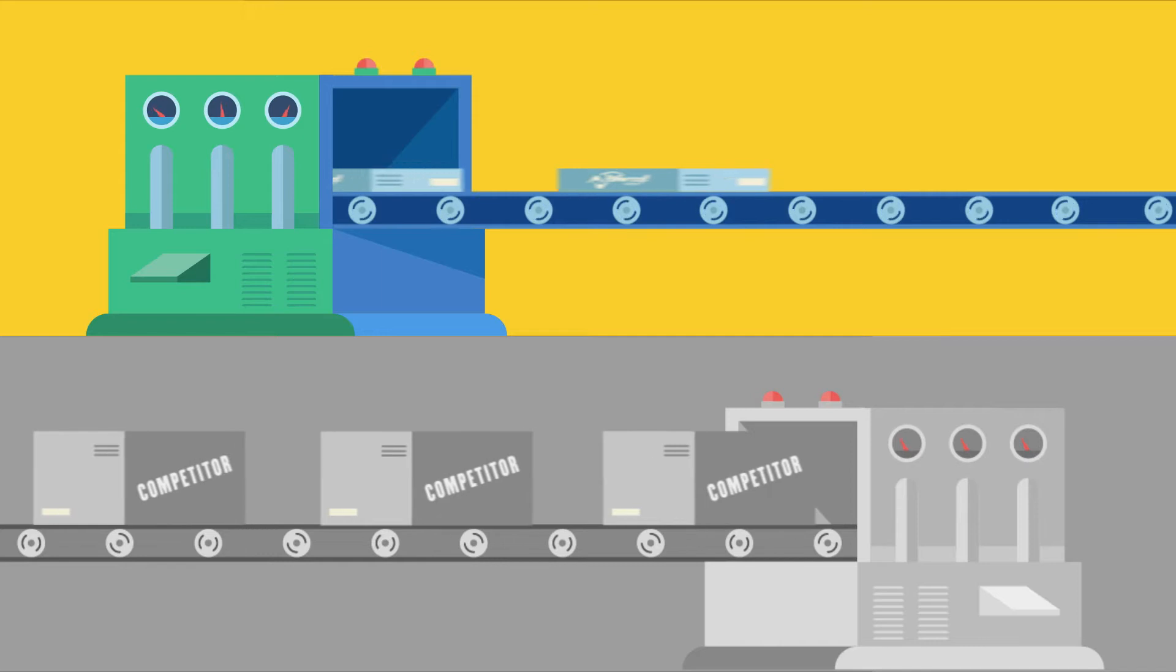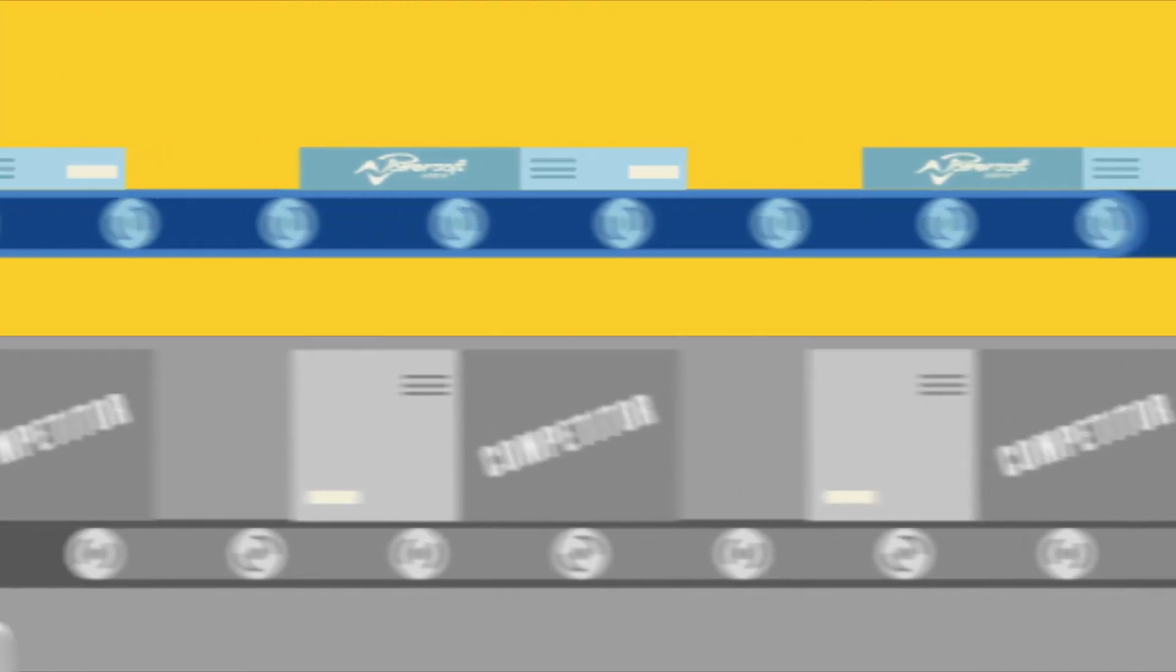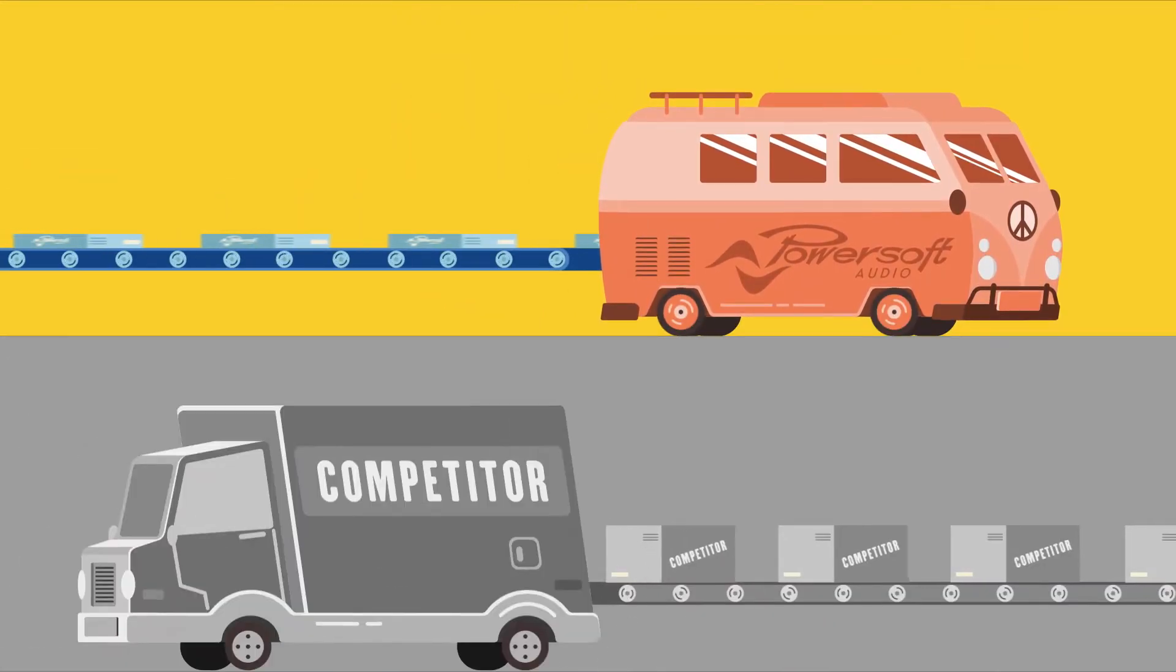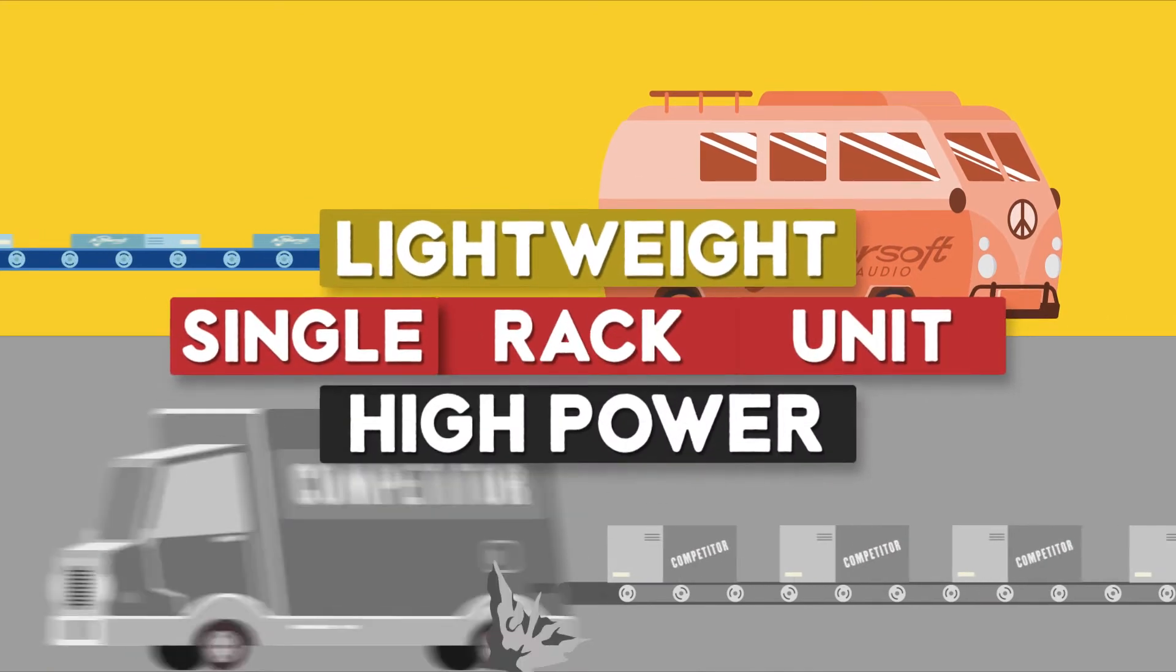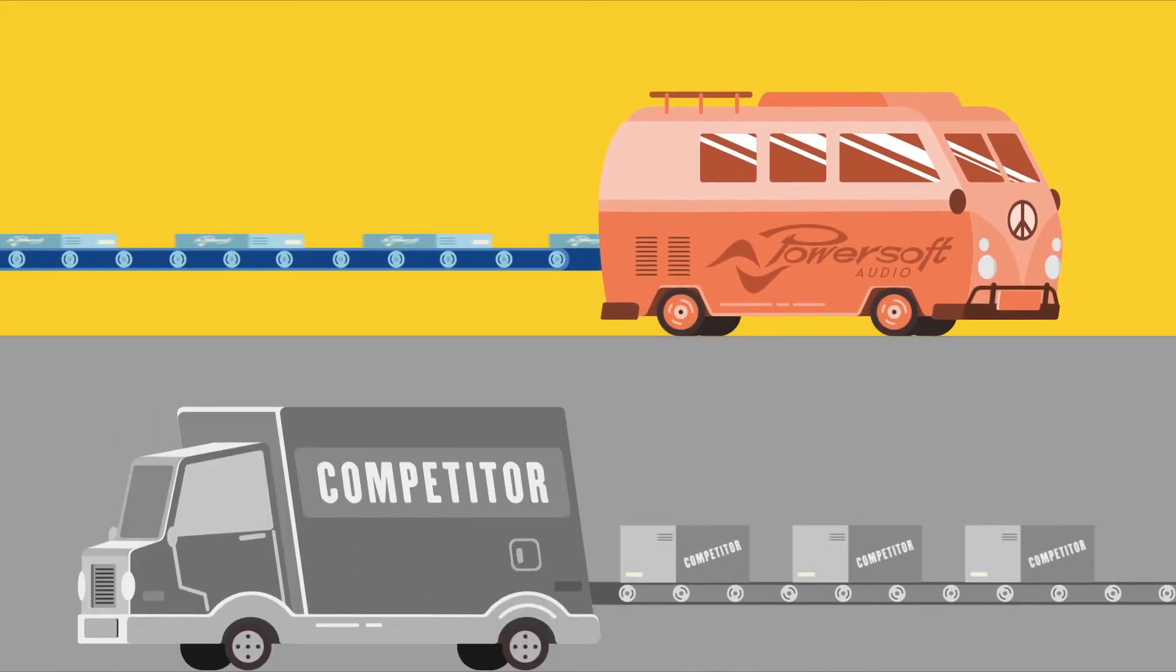PowerSoft's patented switching mode power supply enables the Quattro Canale to be fitted inside a one-rack unit enclosure, meaning that more amps may be carried within a single shipment, reducing CO2 emissions generated by moving large volumes across this wonderful earth of ours.